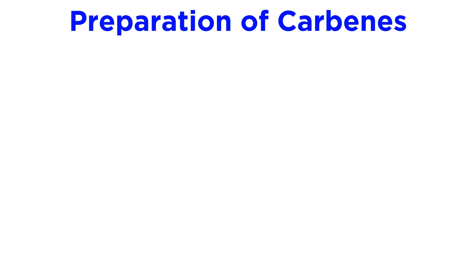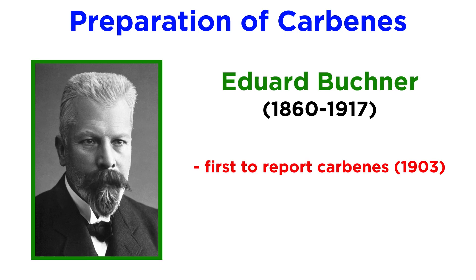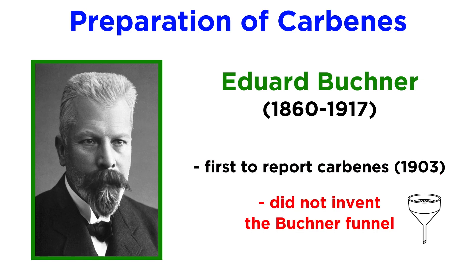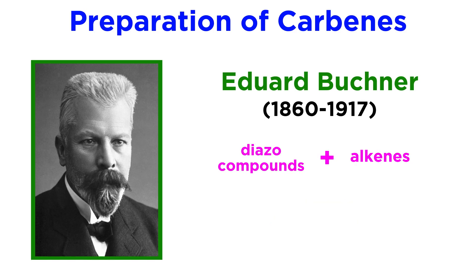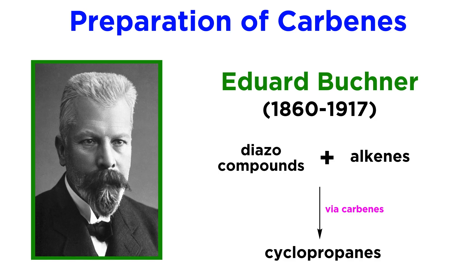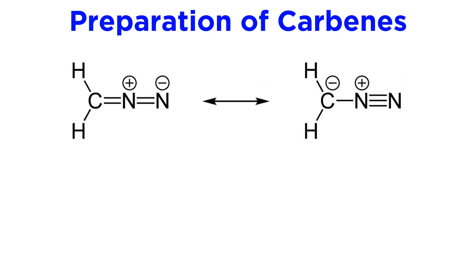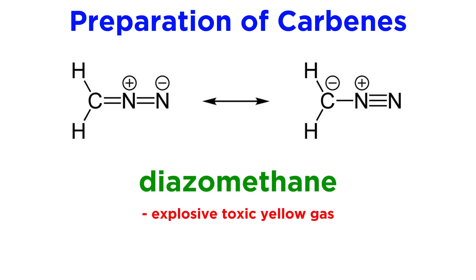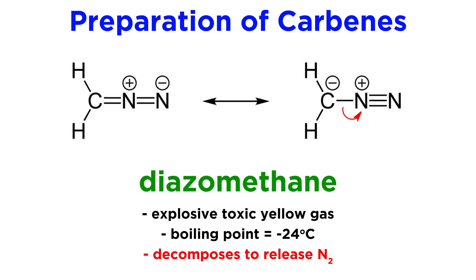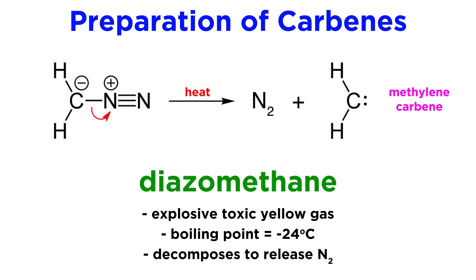So now that we know what carbenes are, how do we make them? Carbenes were first reported in 1903 by German chemist Eduard Buechner, who perhaps surprisingly is not the guy who invented the Buechner funnel. He observed that the decomposition of some diazo compounds in the presence of alkenes produced cyclopropanes, and correctly identified the intervening intermediate as a carbene. Formation of carbenes from diazo compounds remains a common technique to this day. Take, for example, diazomethane, an explosive toxic yellow gas with a boiling point of negative 24 degrees Celsius, shown here in its two resonance structures. If we focus on the structure on the right, we can see that this readily allows for the release of molecular nitrogen, leaving behind a methylene carbene, and this decomposition will proceed upon heating, driven by the stability of diatomic nitrogen.